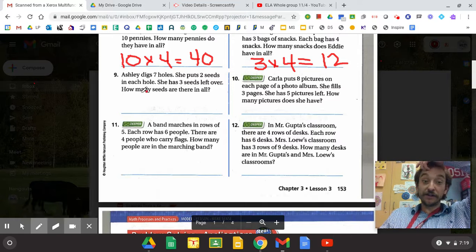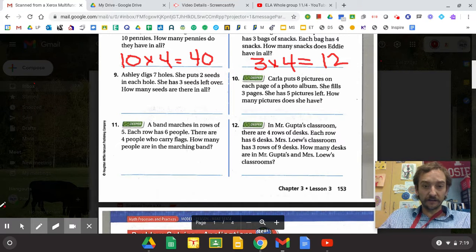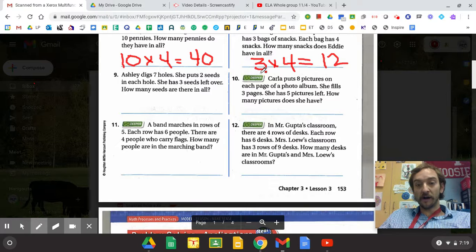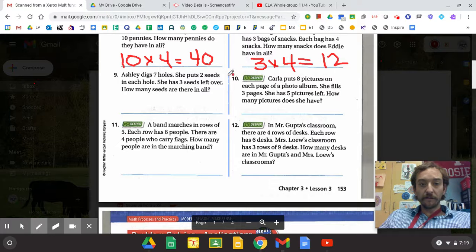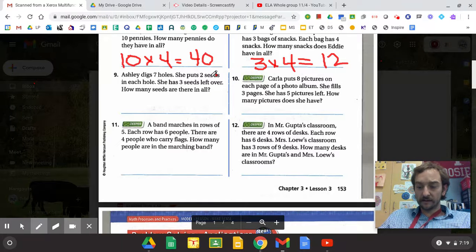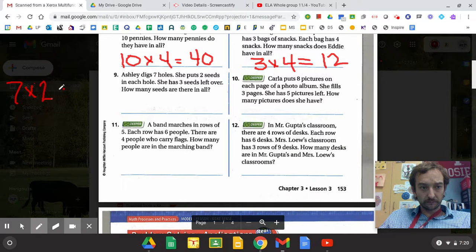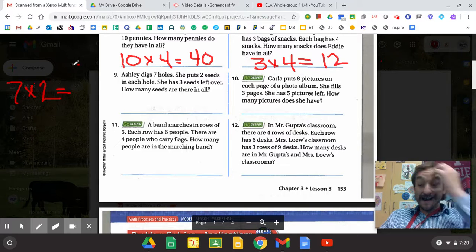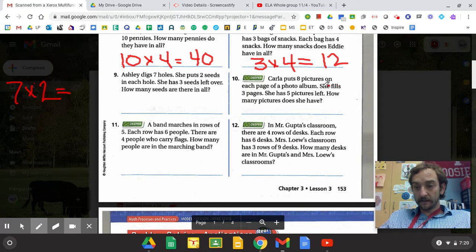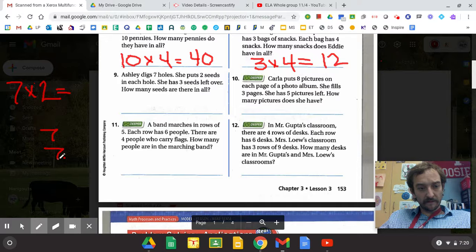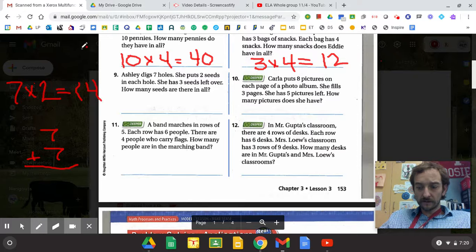Alright, so let's look here at Ashley. Ashley digs seven holes. She puts two seeds in each hole. She has three seeds left over. So this is a two-step word problem. This is going to be a tough one. First thing we need to do is figure out the seven holes, two seeds. So it's going to be the same thing as seven times two. So I don't want to draw seven holes. That's a lot of drawing. So what I want to do is do two groups of seven. So two groups of seven looks like this, right? Add a seven and a seven. There's a group. There's a group. Add them together. So you have 14. So seven times two is going to be 14.